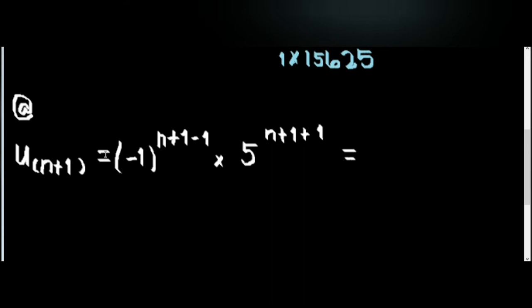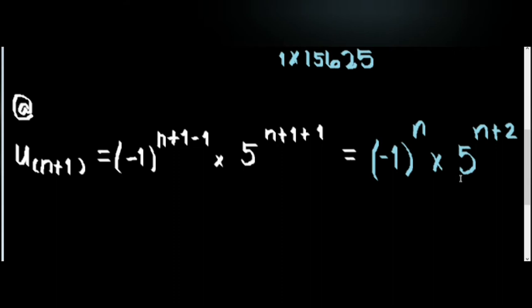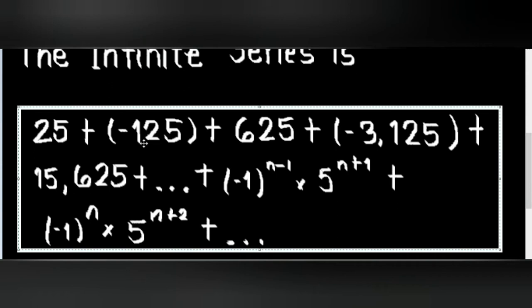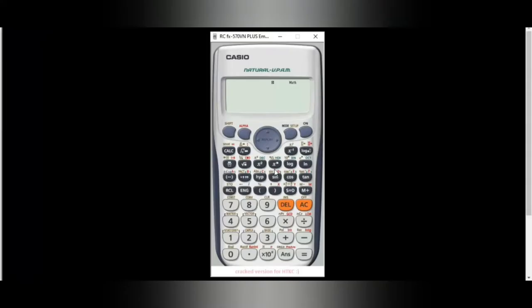For u sub n plus 1, we have negative 1 raised to n plus 1 minus 1 times 5 raised to n plus 1 plus 1. Solving this, we have negative 1 raised to n times 5 raised to n plus 2. Therefore, our final answers are: first term 25, second term negative 125, third term 625, fourth term negative 3,125, fifth term 15,625. For the n plus first term, we have negative 1 raised to n times 5 raised to n plus 2. The infinite series is 25 plus negative 125 plus 625 and so on.